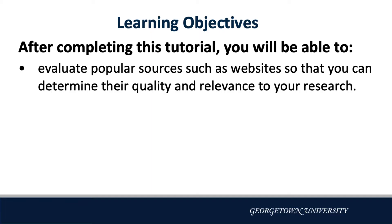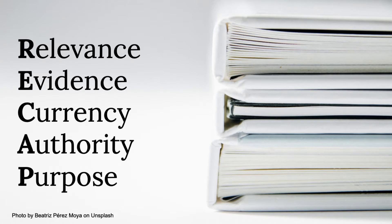After completing this tutorial, you will be able to evaluate popular sources such as websites so that you can determine their quality and relevance to your research. In Evaluating Sources Part 1, you learned about the five main criteria for evaluating sources: relevance, evidence, currency, authority, and purpose. While the first tutorial showed how the criteria apply to a scholarly article, this tutorial will apply them to a website.